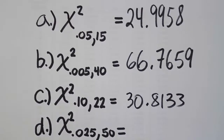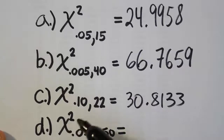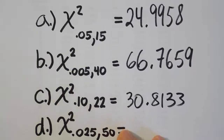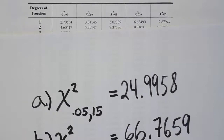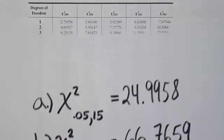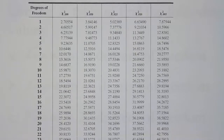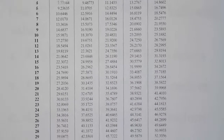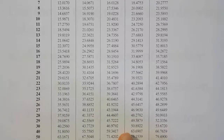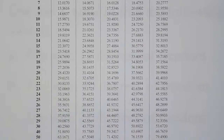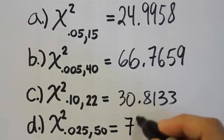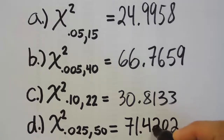The last part, part D, asks for chi-squared₀.₀₂₅ with 50 degrees of freedom — that's 2.5% in the right tail. The 0.025 column is the middle column of the table. Scrolling down to 50 degrees of freedom and looking at the middle column, the answer is 71.4202. That's our final answer for finding chi-squared critical values using the chi-squared table.